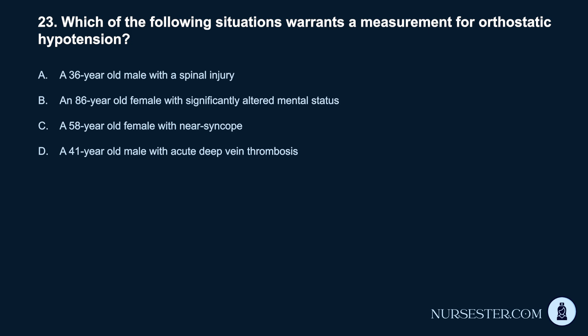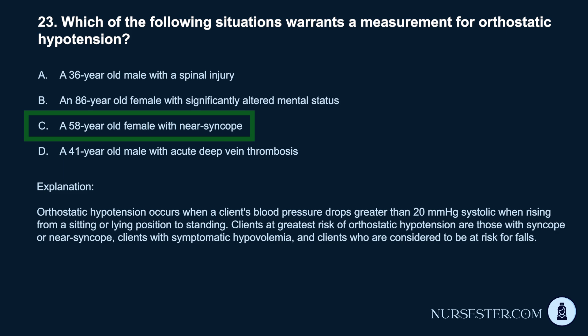Question 23. Which of the following situations warrants a measurement for orthostatic hypotension? a. A 36-year-old male with a spinal injury. b. An 86-year-old female with significantly altered mental status. c. A 58-year-old female with near syncope. d. A 41-year-old male with acute deep vein thrombosis. Correct answer: c. A 58-year-old female with near syncope. Orthostatic hypotension occurs when a client's blood pressure drops greater than 20 mmHg systolic when rising from sitting or lying to standing. Clients at greatest risk include those with syncope or near syncope, symptomatic hypovolemia, and those at risk for falls.